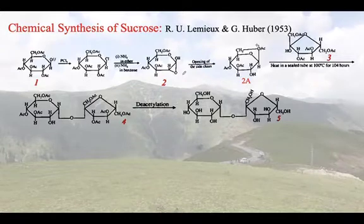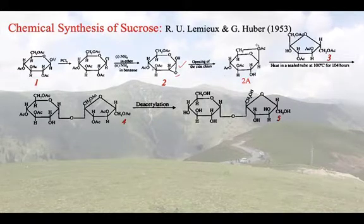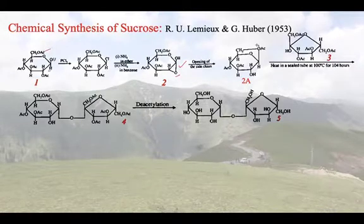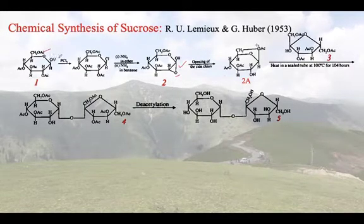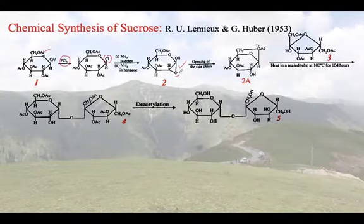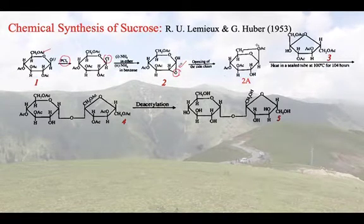Lemieux and Huber started with Brigl's anhydride. Brigl's anhydride has been synthesized from O-3,4,6-tetra-O-acetyl beta-D-glucose. The glucose was protected using acetylating groups at positions 2, 3, 4, and 6, and then treated with PCl5 — that is an SNi type of reaction where the hydroxy group was replaced by chloride — and then treated with ammonia in ether and ammonia in benzene for the synthesis of a cyclic ether, which is Brigl's anhydride.